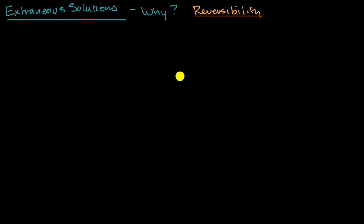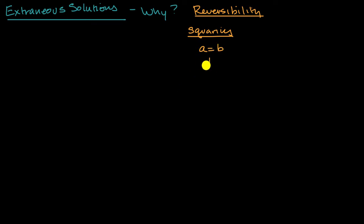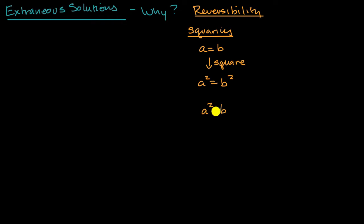One is squaring and the other is multiplying both sides by a variable expression. Let's see the example of squaring, and then we're going to see it in an actual scenario where you're dealing with an extraneous solution. We know, for example, that if a is equal to b, I could square both sides and then a squared is going to be equal to b squared. But the other way is not true. If a squared is equal to b squared, it is not always the case that a is equal to b.